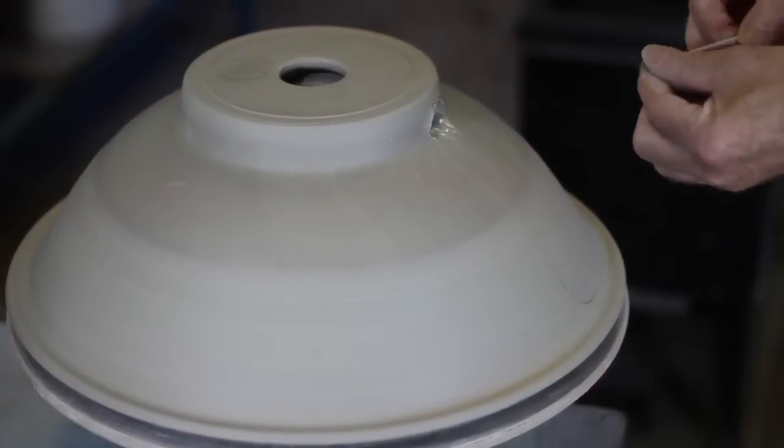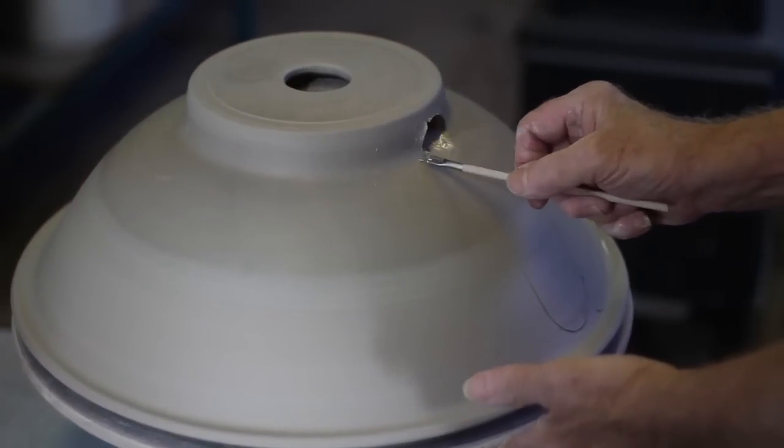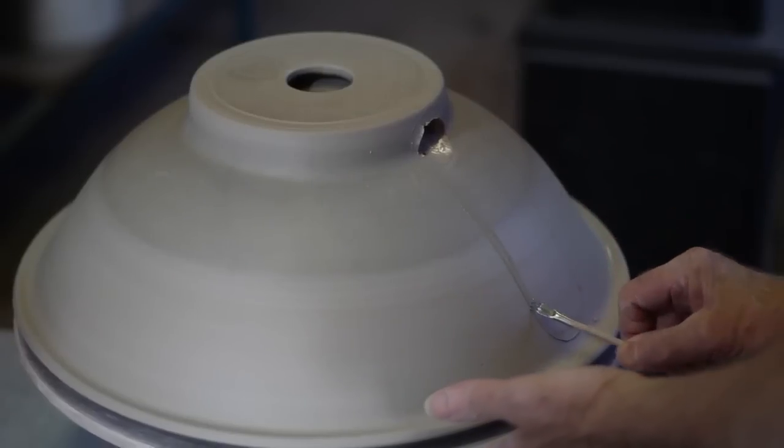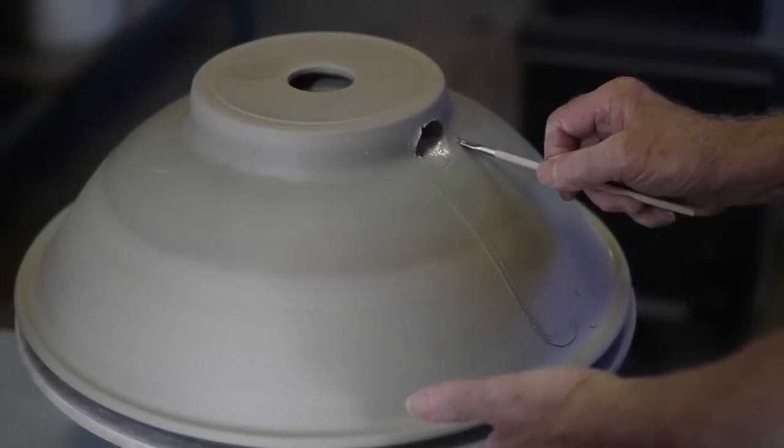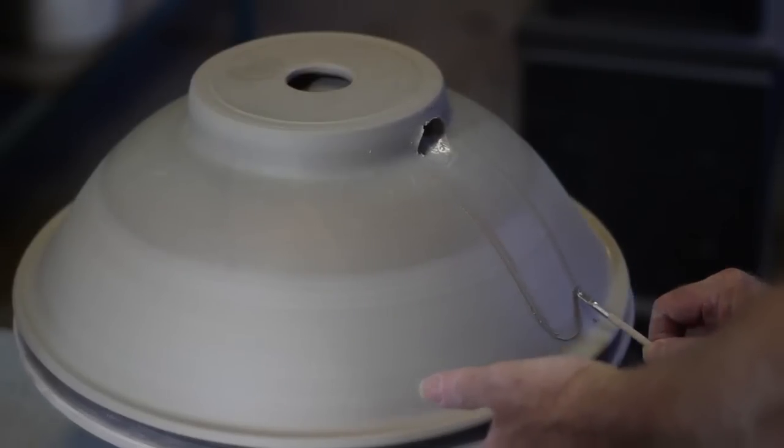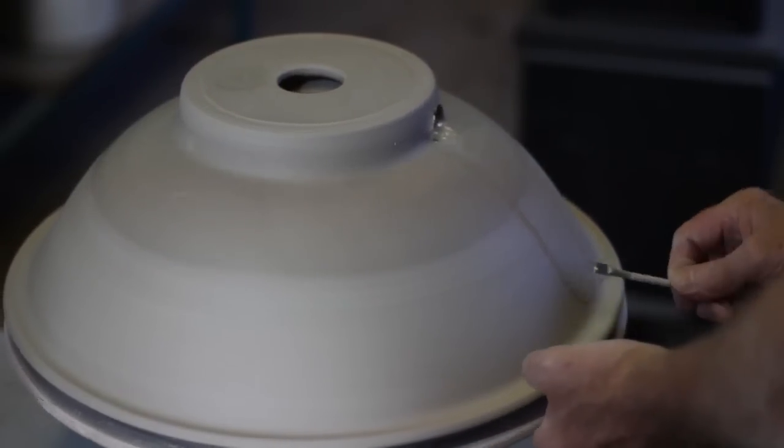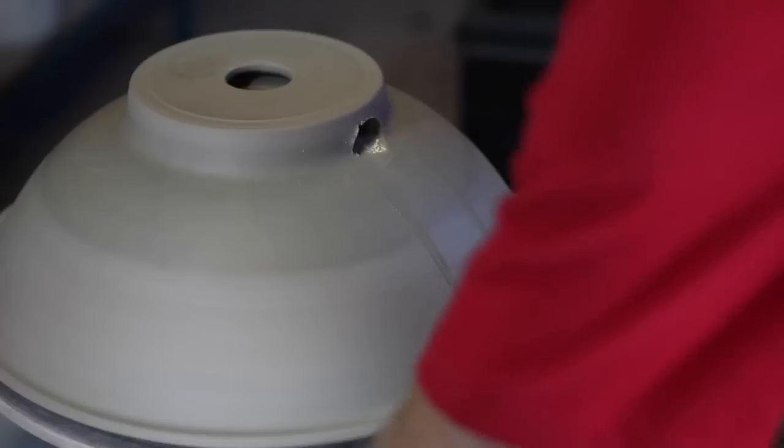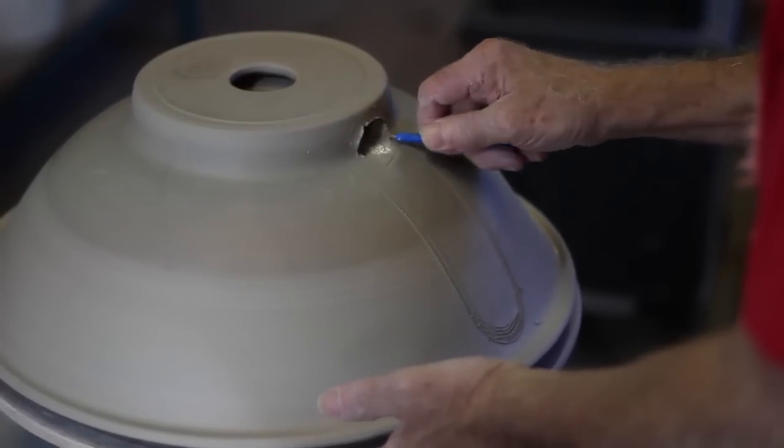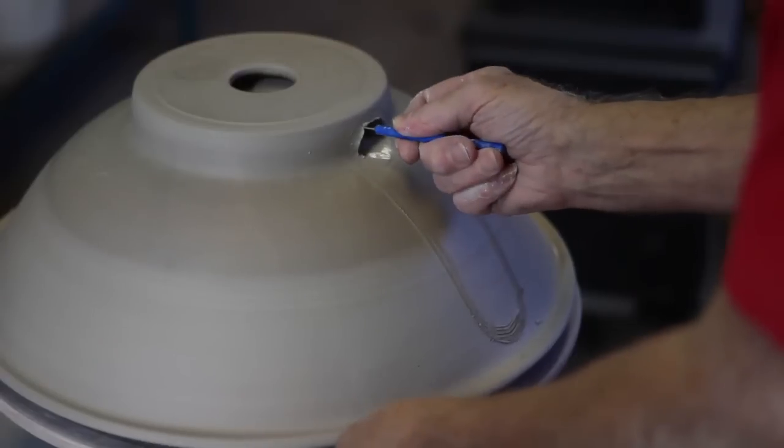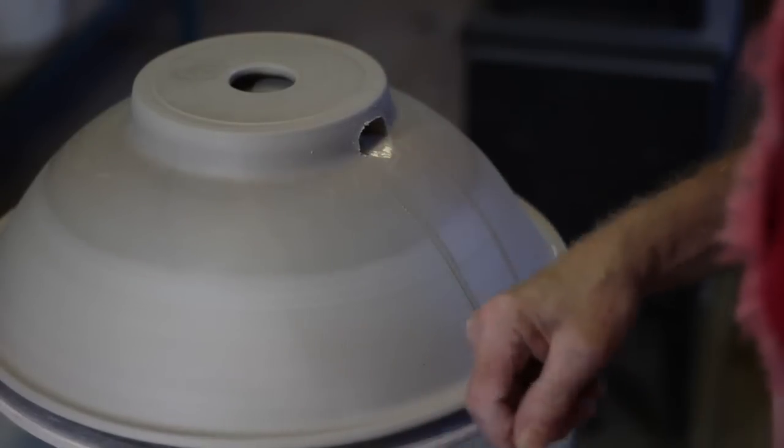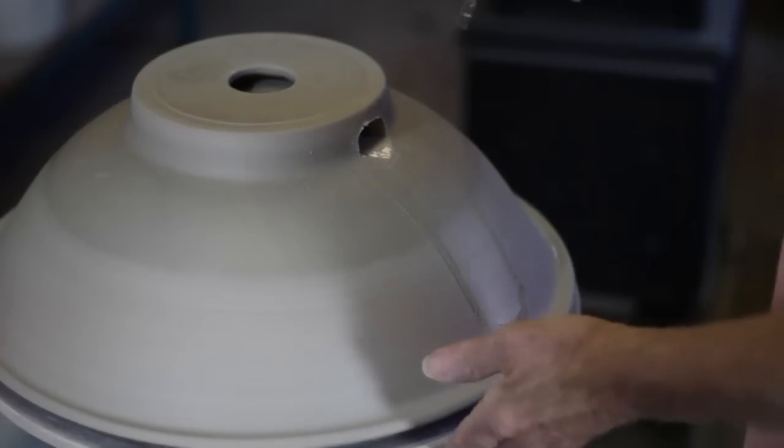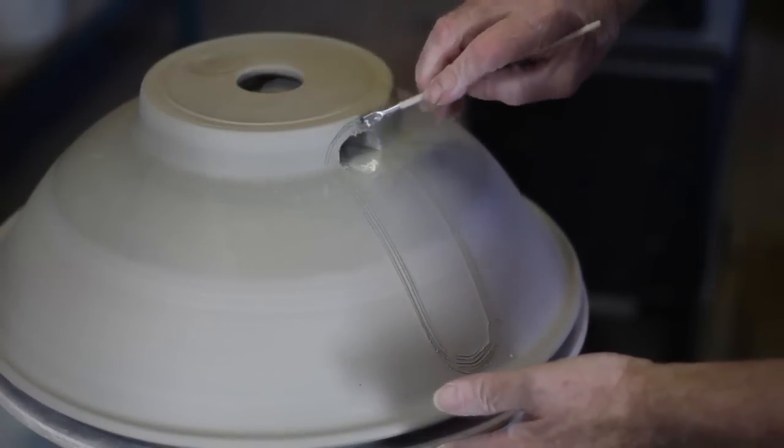Then I'll take my little tool here. This tool was designed so it's the right width for this joint. I just scratch that up like so. This could go out a little more there. Then I'll scratch across here.